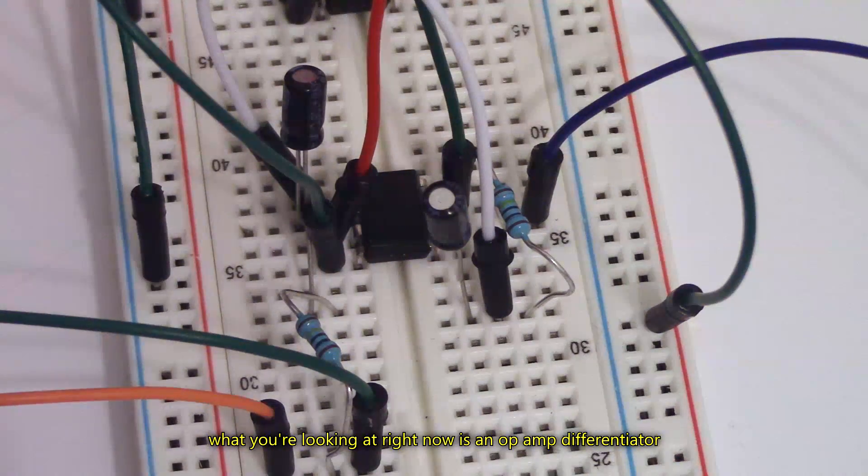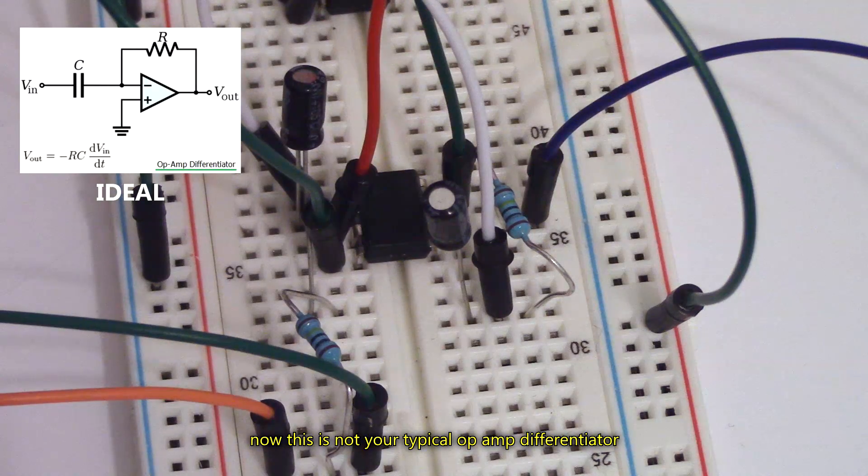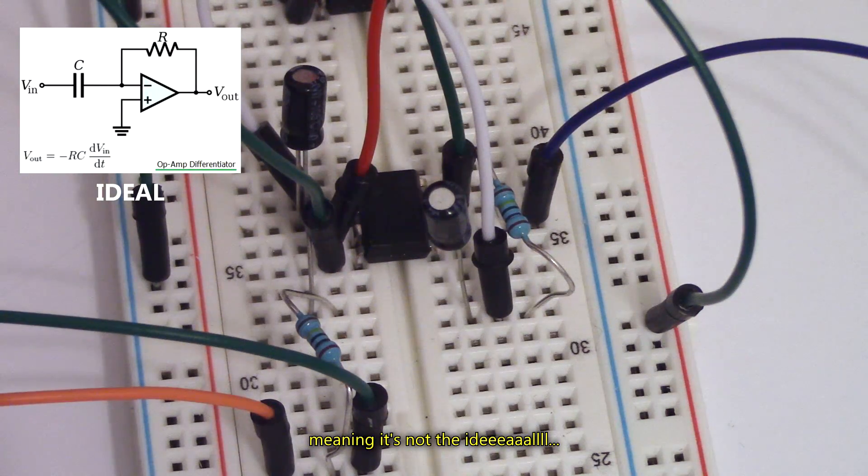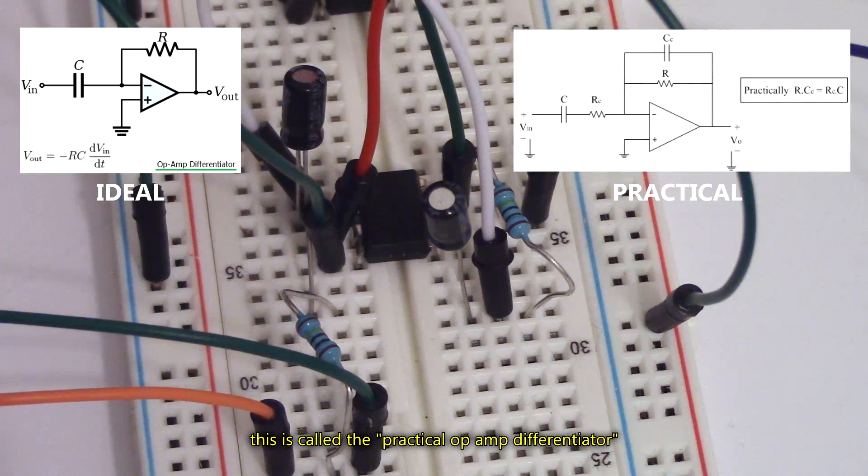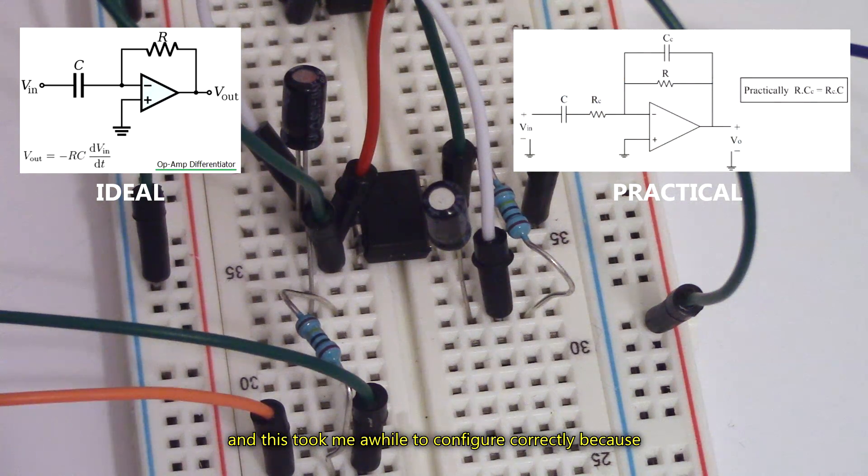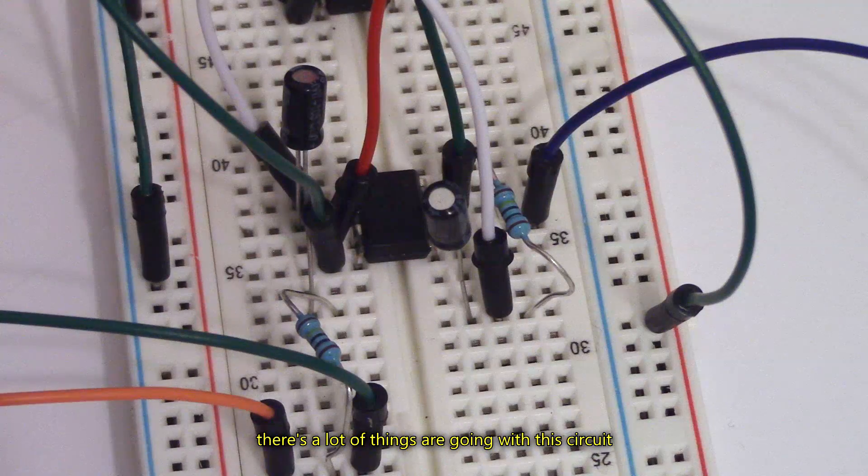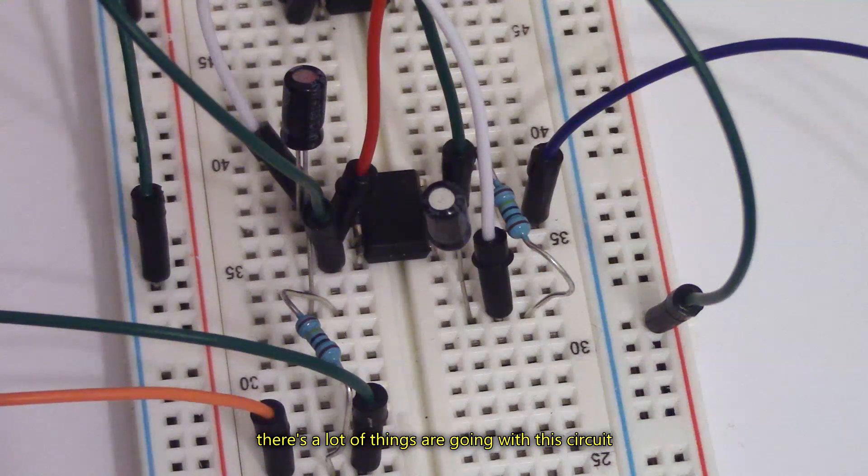What you're looking at right now is an op-amp differentiator. Now this is not your typical op-amp differentiator, meaning it's not the ideal circuit one. This is called the practical op-amp differentiator. And this took me a while to configure correctly because there's a lot of things that are going on with this circuit.